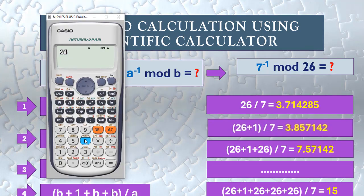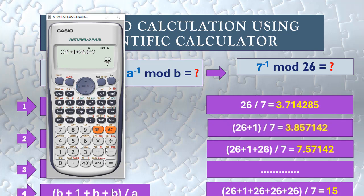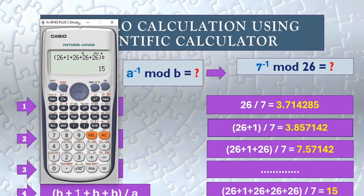Let's check on our calculator: 26 over 7 — it's a fraction. So we add 1, which gives another fraction. We add 26, still a fraction. We add another 26, still a fraction. We add another 26, and it equals 15. So the multiplicative inverse of 7 mod 26 equals 15.